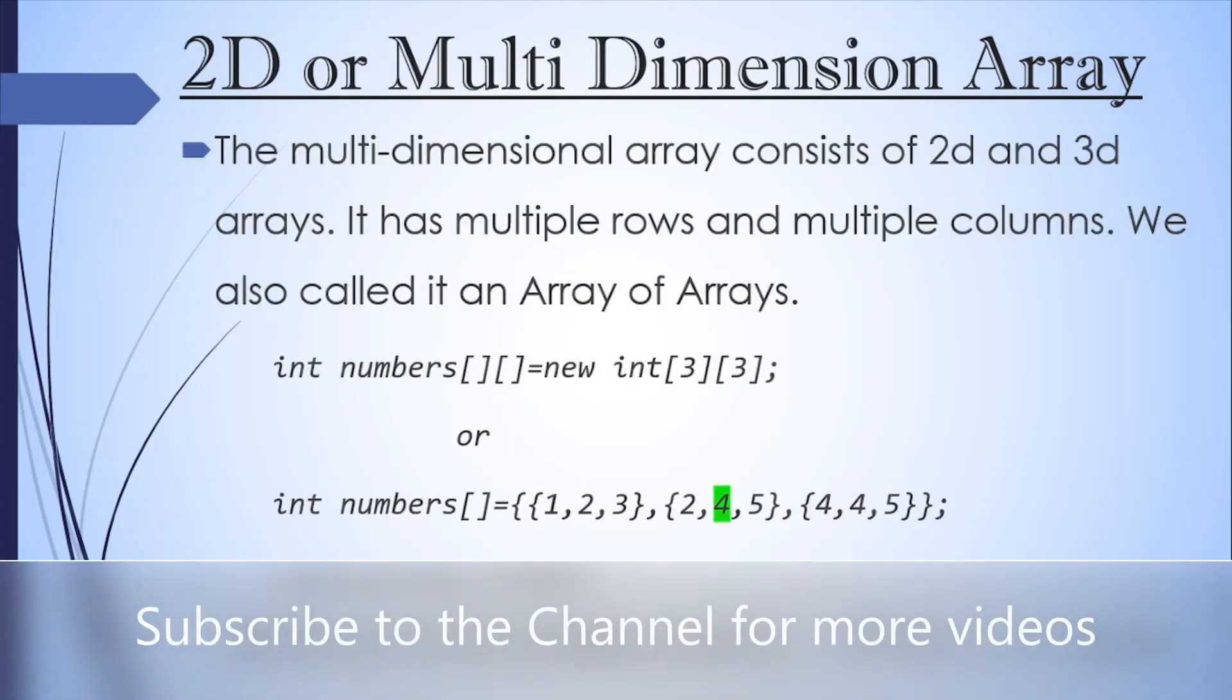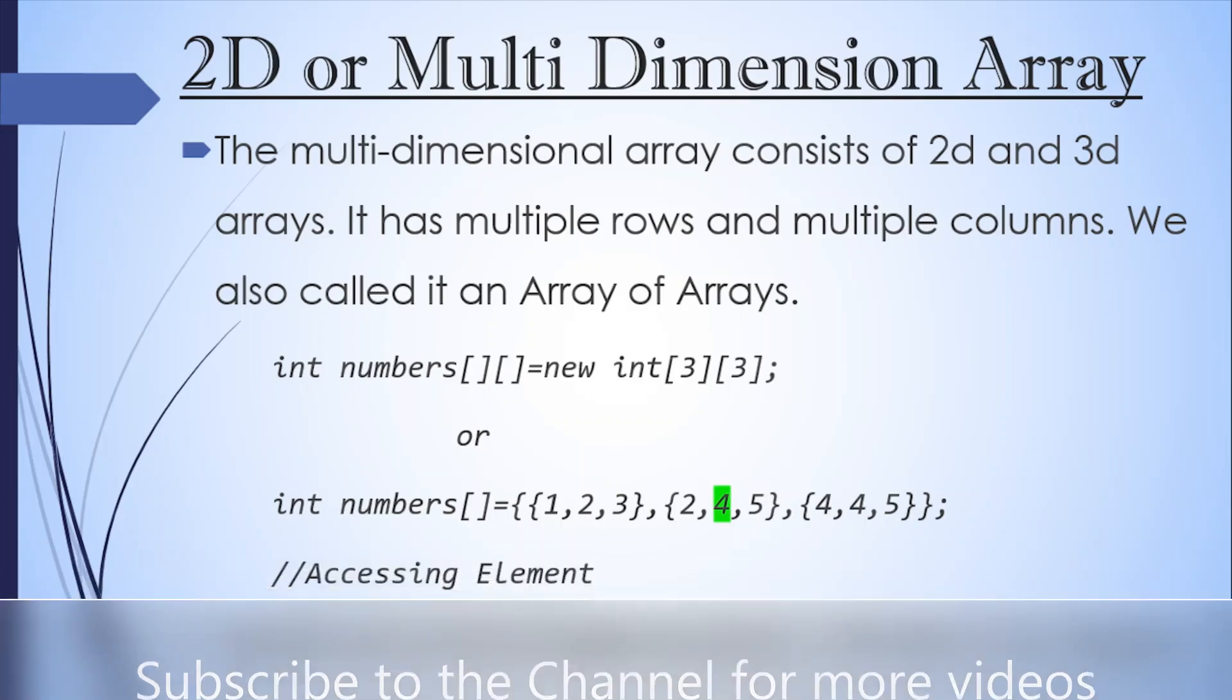Then we have multi-dimensional array. The multi-dimensional array consists of 2D and 3D arrays. It has multiple rows and multiple columns. We also call it an array of arrays. So this is how it will be declared. So instead of a single bracket, we have to add one more bracket here so that we can specify the number of rows and number of columns. The first bracket will be having the size of number of rows and the second will be specified as number of columns.